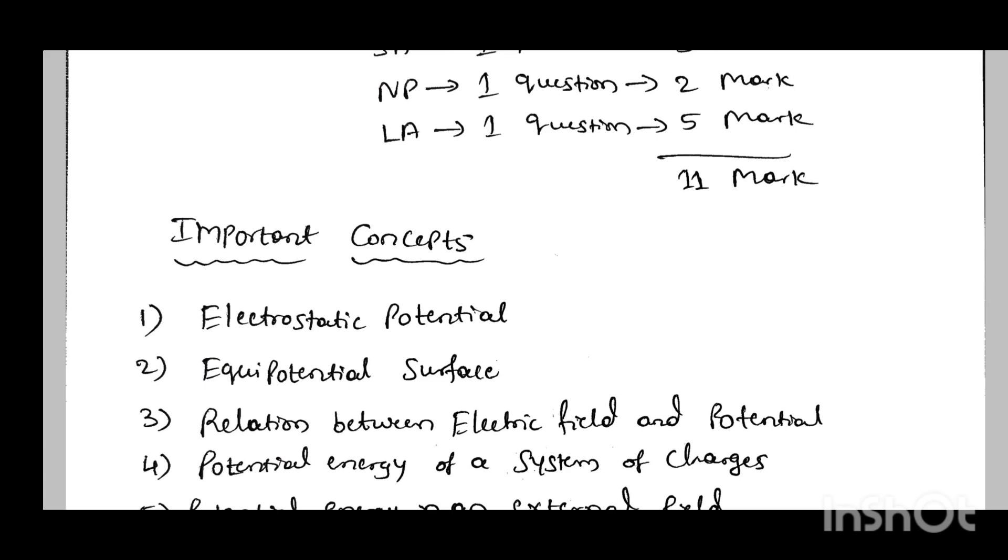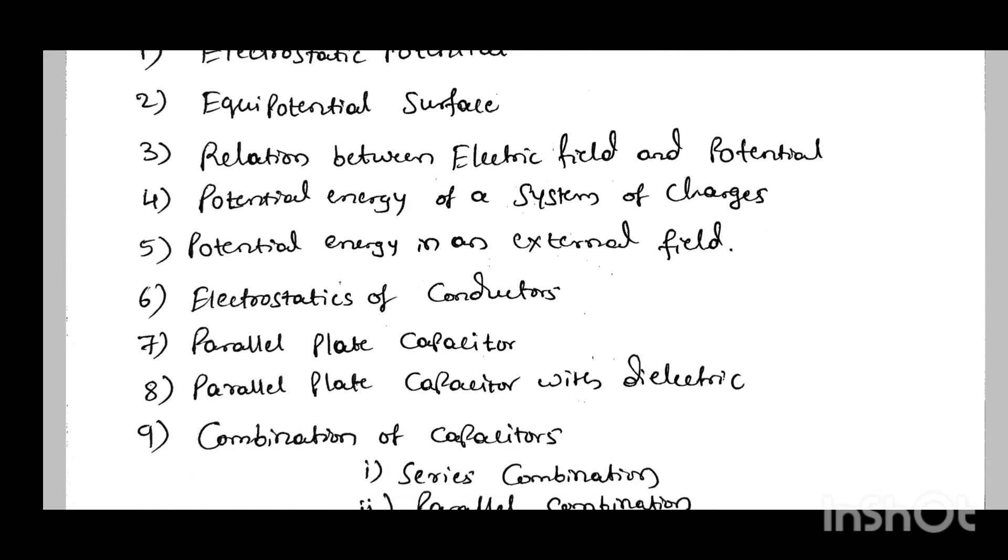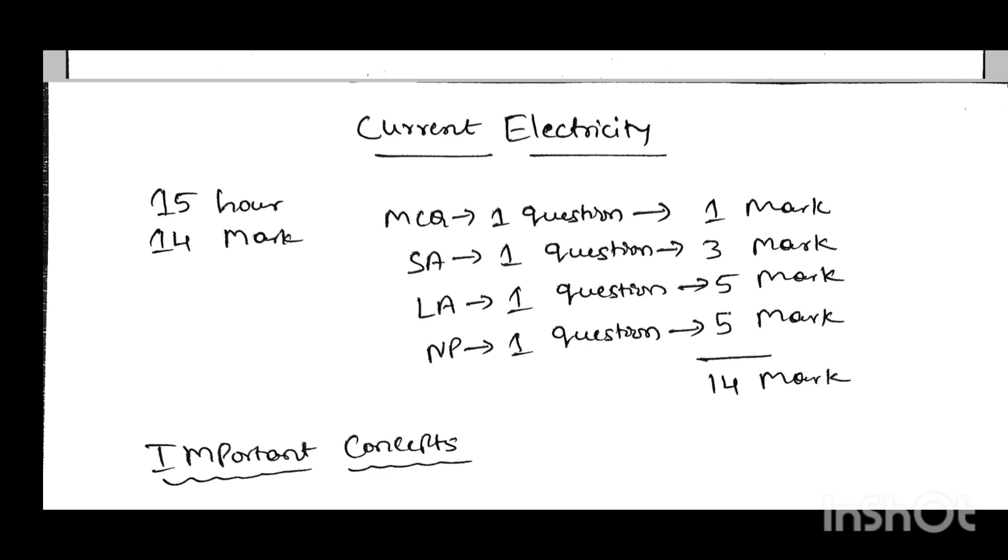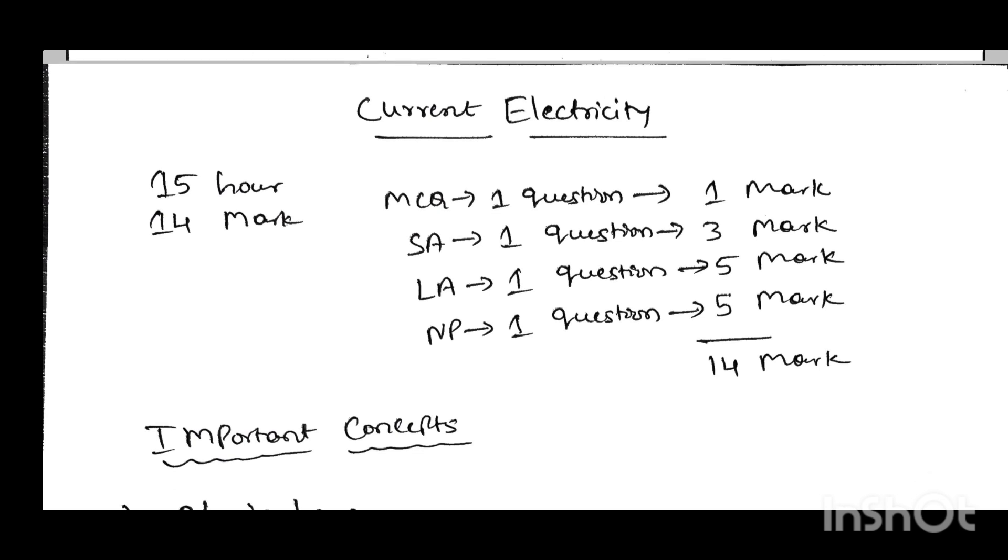Next, I will go through the next chapter, current electricity. This is one of the biggest chapters in 2nd PUC Physics. From current electricity, you have more contribution in your annual exam compared to other chapters. From this chapter, the total teaching hours is 15 hours and total allotted mark is 14 marks.